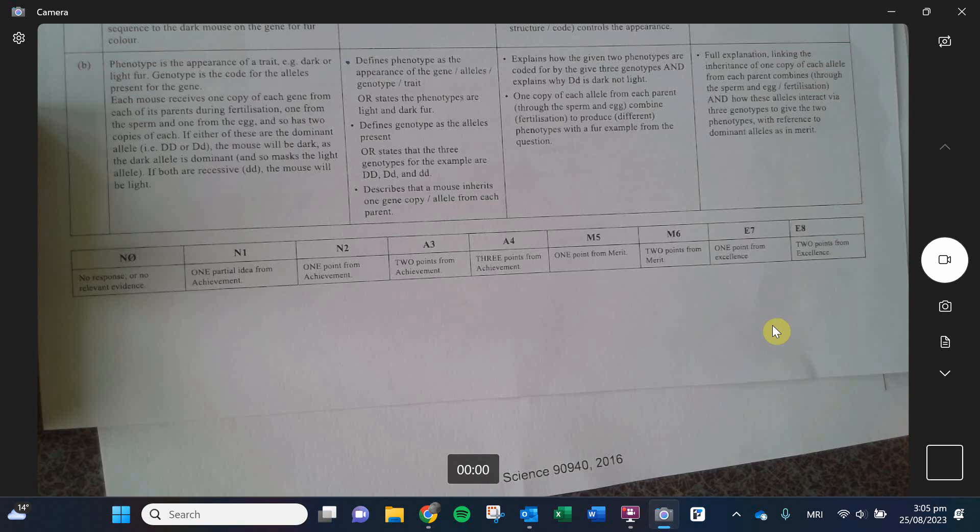It is worthwhile to answer everything. Because if you leave a question blank, it's an N0. If you attempt it, you might then be able to get like one or two points. And that one or two points could be enough to cross the line. Say, for example, the first question you got an A4. The second question you got an A4. So you have eight points. And let's say achieved is nine points. If you attempted one of those questions, and you were able to get an N1, you would then have nine points and you'd be able to pass. So don't leave anything blank on these exams. It's better to get an N1 or an N2 than an N0.